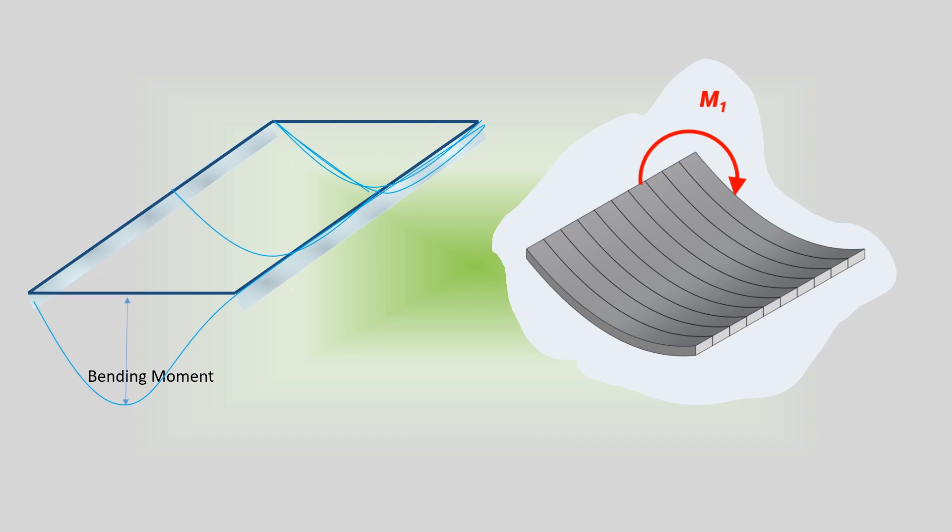The structural action of a one-way slab under the imposed load can be visualized in terms of a deformed shape as shown.